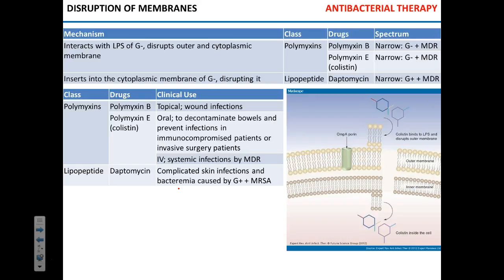So, what types of antimicrobials have we looked at so far? We talked about the inhibitors of cell wall synthesis — vancomycin, bacitracin, and different types of beta-lactams like penicillin and carbapenems, monobactams. We looked at the inhibitors of protein synthesis, which have about six classes. And we looked at the disruptors of the membrane — polymyxins and daptomycin, the lipopeptide.